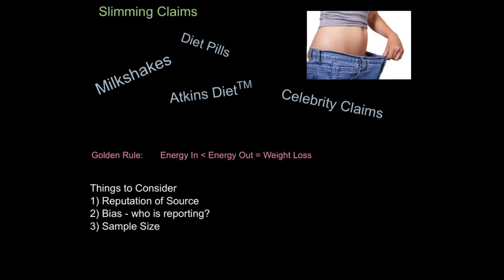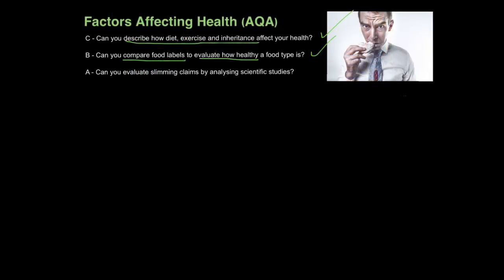Third, and incredibly importantly, what is the sample size? If it's just one celebrity claiming they've lost weight, you can't generalize that to the entire population. You need many, many people to be tested before you can confirm results and form solid conclusions. Finally, it's also important to get backup in the form of secondary sources — meaning someone else has also carried out your study and found exactly the same thing, forming the same conclusion. And that's how you evaluate slimming claims by analysing scientific studies.